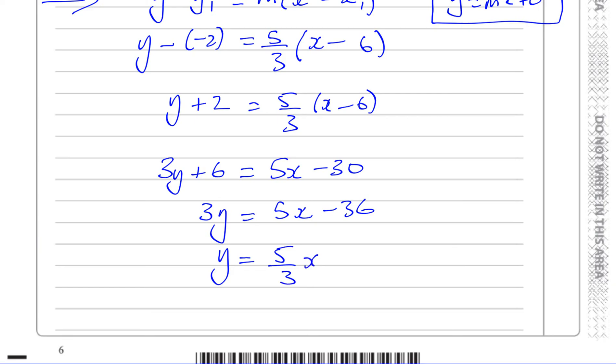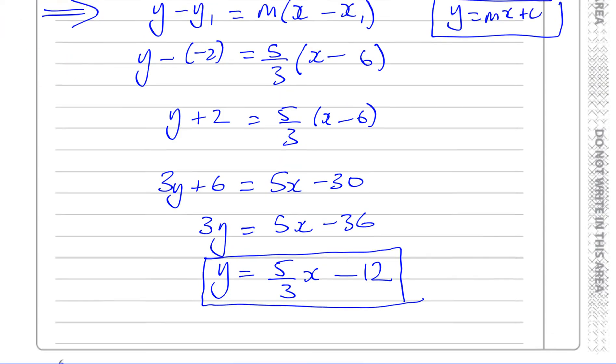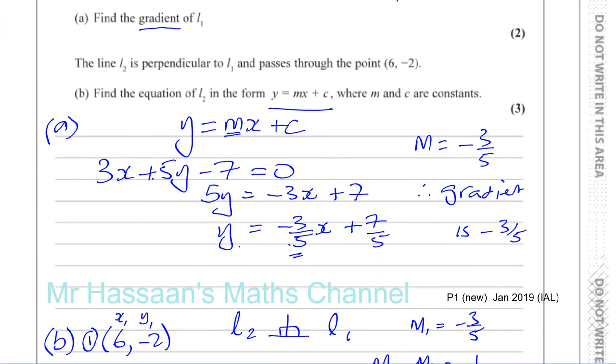So you have 5 over 3x, and you've got minus 36 divided by 3, which is 12. And there we have the answer to our question. I hope that was quite clear for you. That's pretty much an IGCSE question, actually.